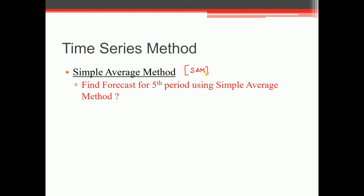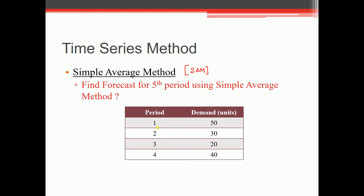The question is: find the forecast for the fifth period using the Simple Average Method. The data given is: Period 1 — 50 units, Period 2 — 30 units, Period 3 — 20 units, Period 4 — 40 units. For the fifth period, the forecast equals the average of all these values.